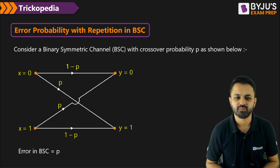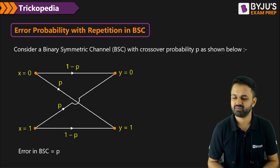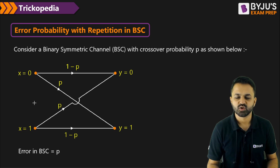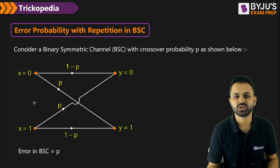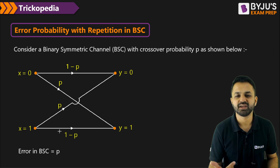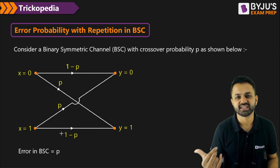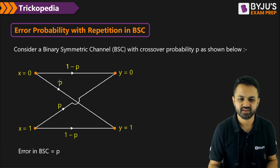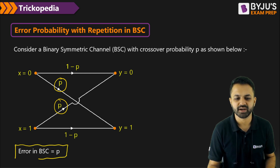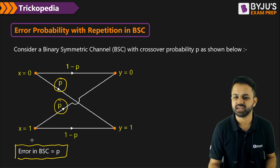When we talk about the binary symmetric channel, we transmit 0 or 1. When we transmit 0, we can receive 1 — that is the error — and when we transmit 1, we can receive 0, which is another chance of error. So the error probability in the binary symmetric channel is P.